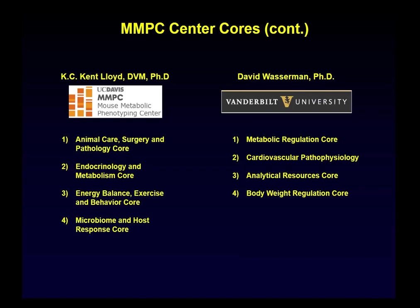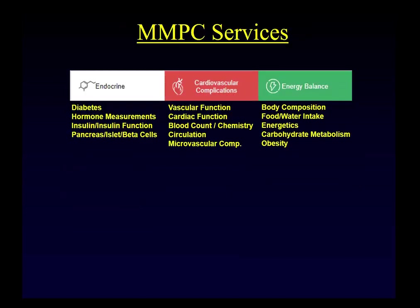As you can see from the variations in cores, there's quite a bit of potential services offered by the MMPCs across a number of different domains. For endocrine systems: diabetes phenotyping, hormone measurements, insulin function, and pancreas, islet, and beta cell function. For cardiovascular complications: vascular function, cardiac function, blood count and chemistry, circulation, and microvascular complications. For energy balance: body composition, food and water intake, energetics, carbohydrate metabolism, and phenotyping services for obese animals.